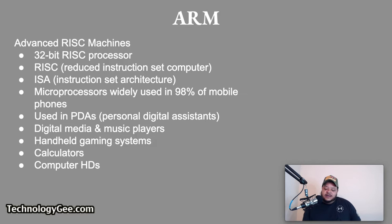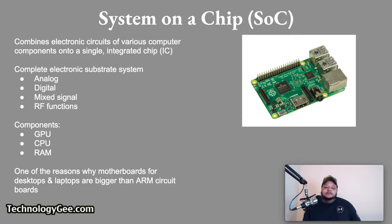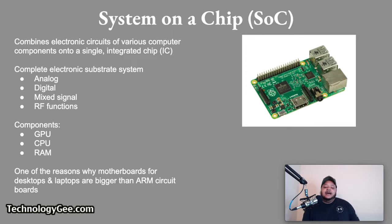A System on a Chip, also known as an SoC, combines the required electronic circuits of various computer components onto a single integrated chip. An SoC is a complete electronic substrate system that may contain analog, digital, mixed signal, or radio frequency functions. Its components usually include a GPU, a CPU that may be multi-core, and some system memory (RAM). This is one of the main reasons why motherboards for desktops and laptops are so much bigger than the ARM-based SoC circuit board.